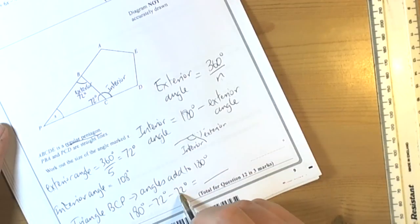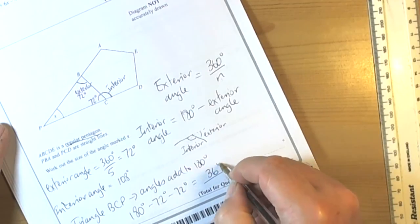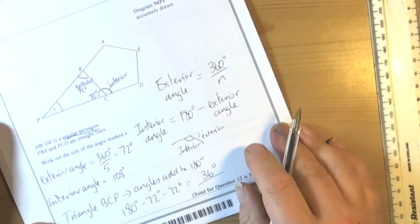So we've got 72 and 72 make 144, 180 take away 144 is 36 degrees. So the answer here will be 36 degrees.